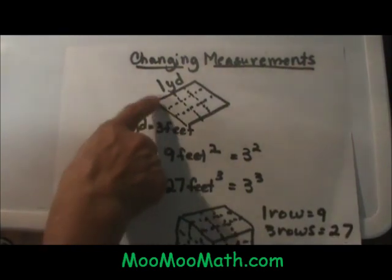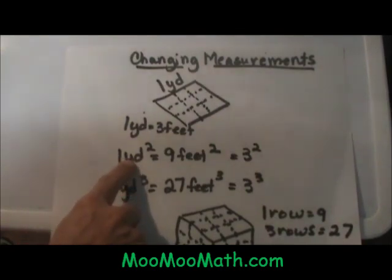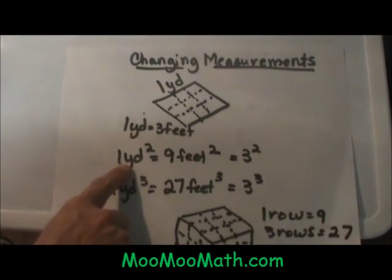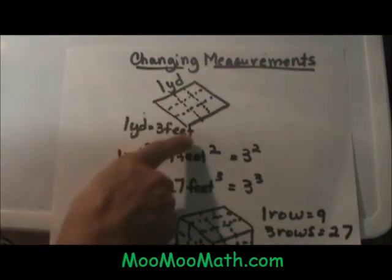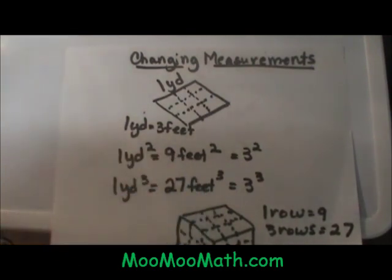So my linear measurement would be 3. So if I have 1 square yard, how many square feet would that be? Well I would take 3 squared or 9. So it would be 9 square feet.